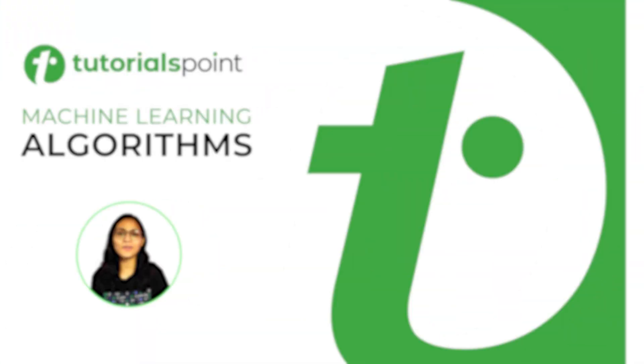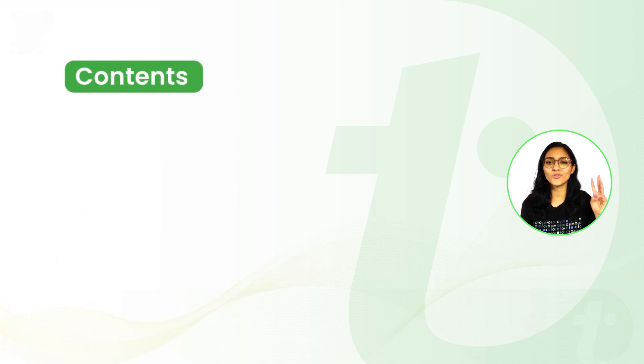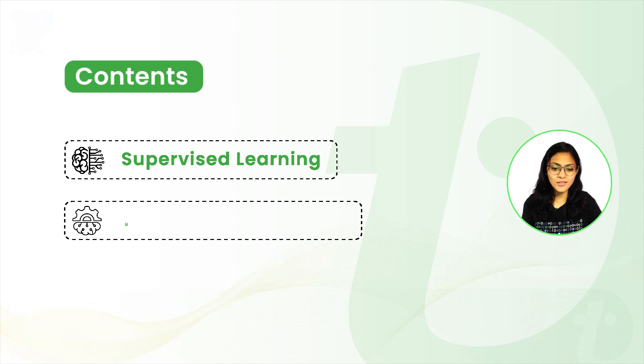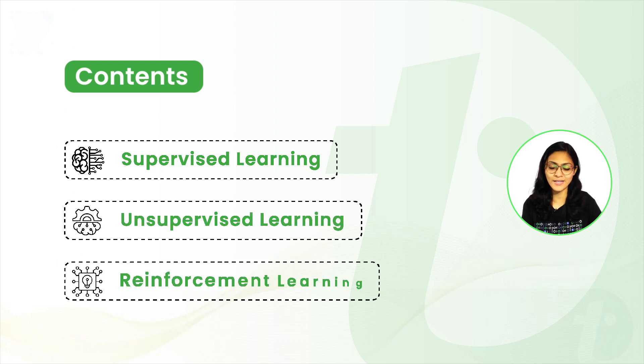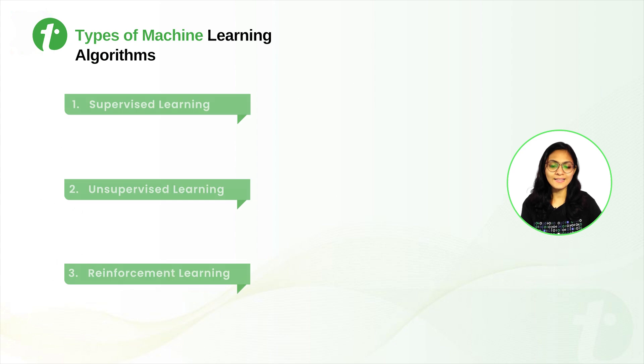In this video, we are going to look at the three main types of Machine Learning Algorithms: Supervised Learning, Unsupervised Learning, and Reinforcement Learning with suitable examples. So first, let's look at the basic difference between these three types of Machine Learning Algorithms.